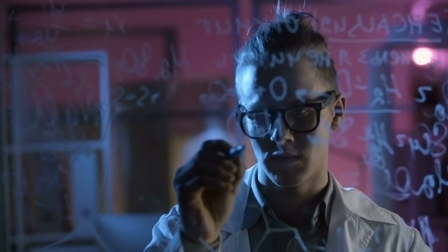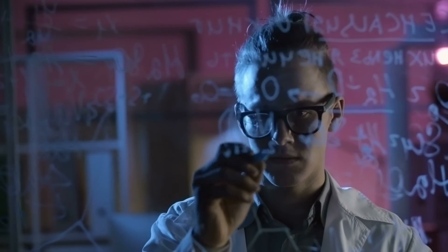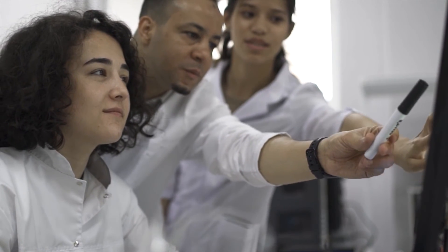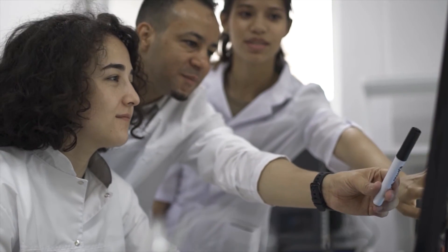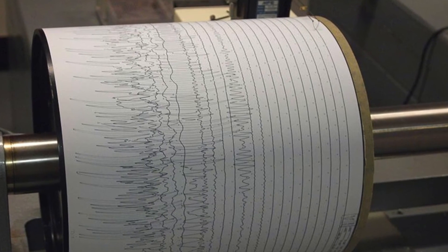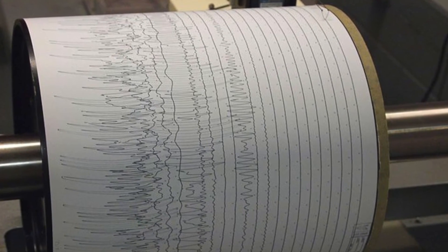Scientists cannot predict when an earthquake will happen — if they could, many lives would be saved. However, scientists can measure the strength of an earthquake while it is happening. They use an instrument called a seismograph to do this. A seismograph records the shaking of the earth by drawing lines on paper. The longer the lines, the stronger the earthquake.